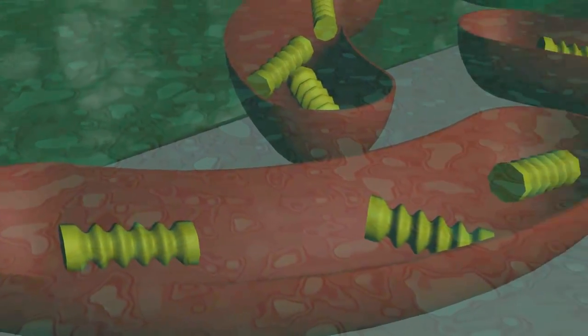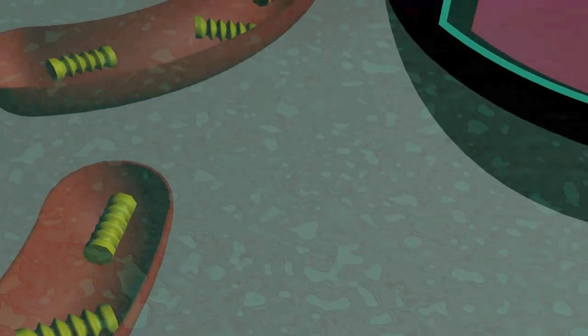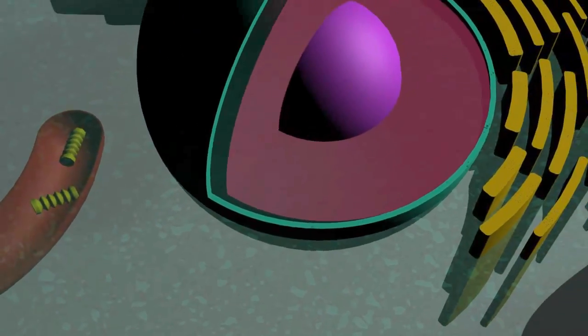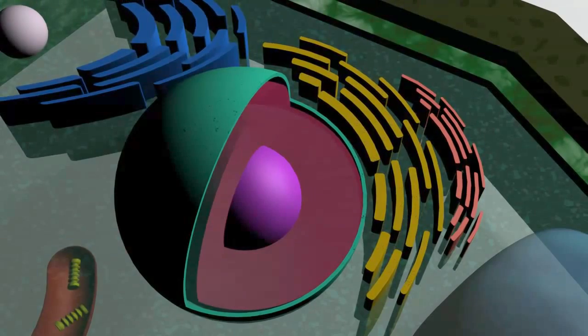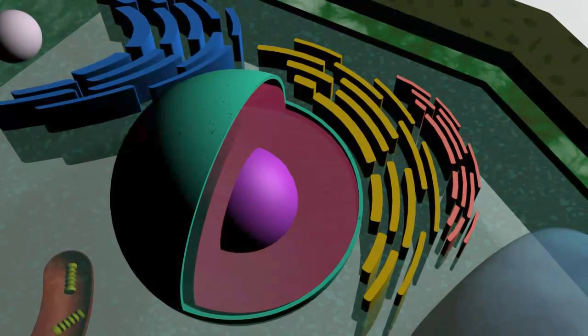The endoplasmic reticulum are eukaryotic organelles that form an interconnected network of tubules and vessels. The endoplasmic reticulum curves itself around the nucleus and comes in two forms, rough and smooth. The organelles may seem similar, but they are truly very different.